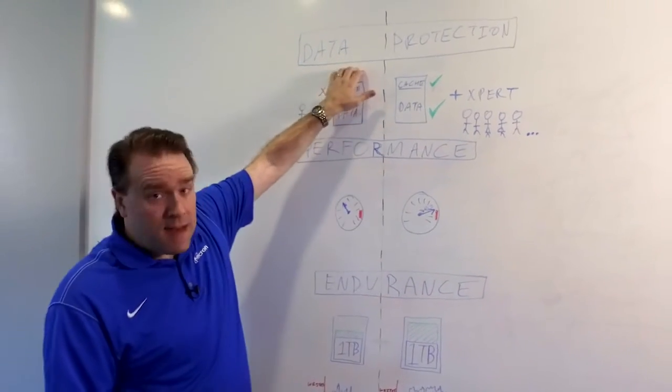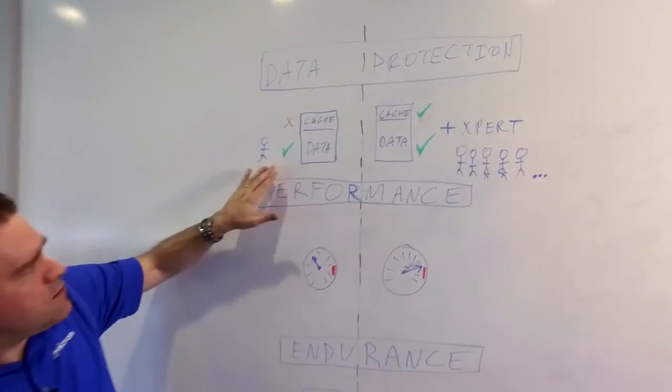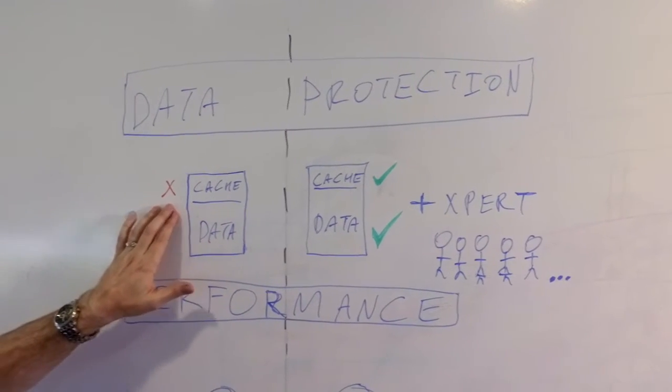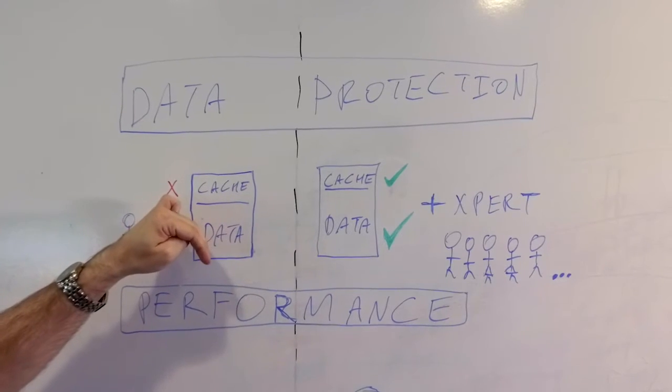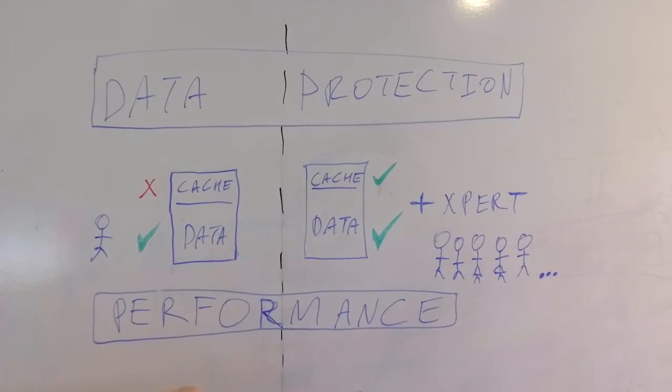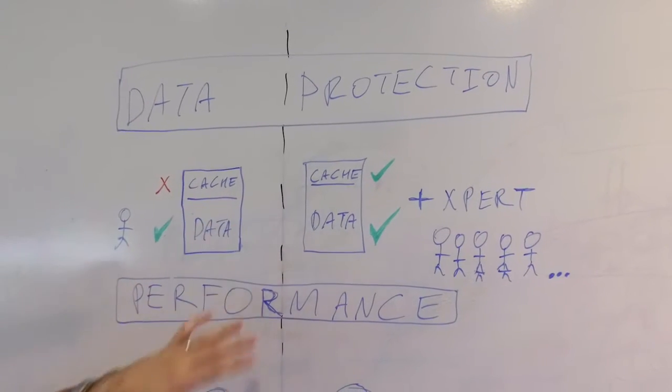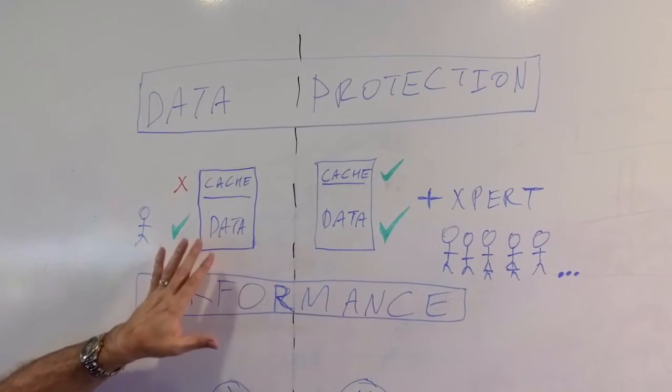Next thing is data protection. Again, whenever you have your one client user doing the data, you've got the cache layer where essentially the cache comes in on its way to being written to the data of the drive. In the client environment, you really don't need to protect that cache. You've got local battery, you've got all kinds of things keeping that safe.